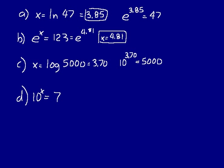In practice problem D, 10 to the X equals 7 — how do we find X? We see a base of 10 raised to the power of X, so we can take the logarithm of 7, which will tell us the exponent of 7 to a base of 10. Take LOG of 7, and you get about 0.845. So 10 to the X equals 10 to the 0.845, and therefore X equals 0.845.